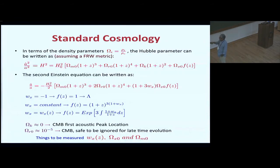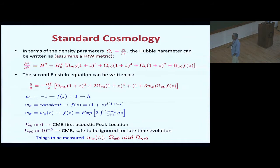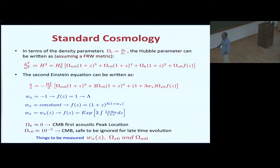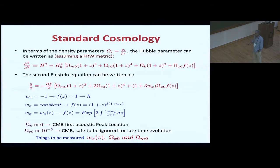Regarding curvature: CMB's first acoustic peak says the universe is spatially flat, so we can safely ignore the omega_K component. The radiation component is around 10^-5 at present, so for late-time cosmology we can drop both terms. Only the dark component density, the matter component, and the equation of state parameters need to be measured and constrained.